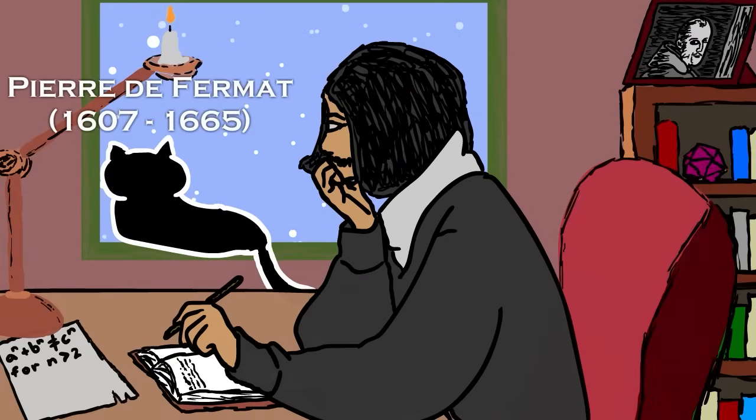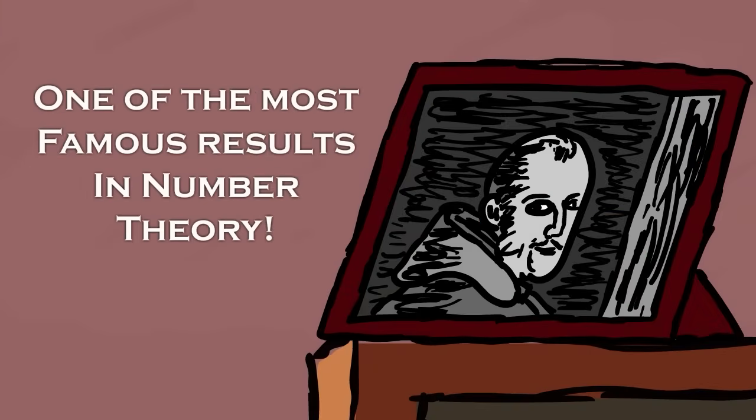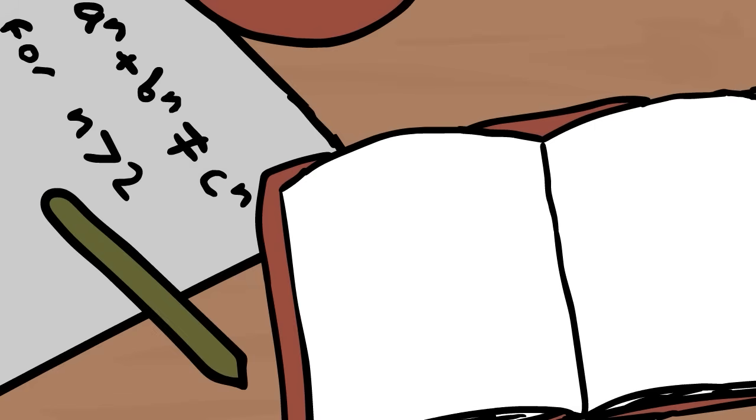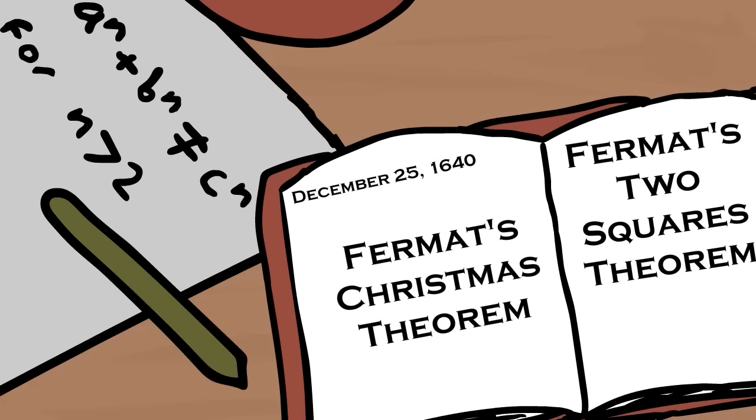On December 25th, 1640, Pierre de Fermat wrote a letter to Maren Mersin detailing one of the most famous results in number theory. It's known as Fermat's Christmas theorem because of the date he wrote the letter, but it's better known as Fermat's two squares theorem.